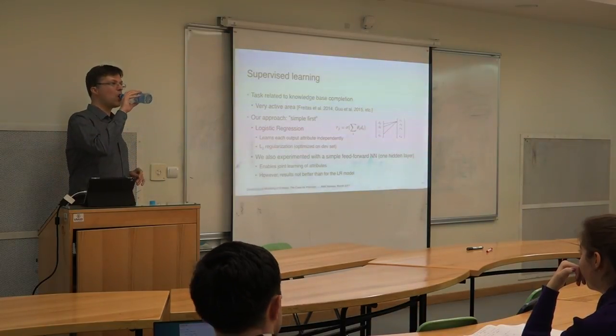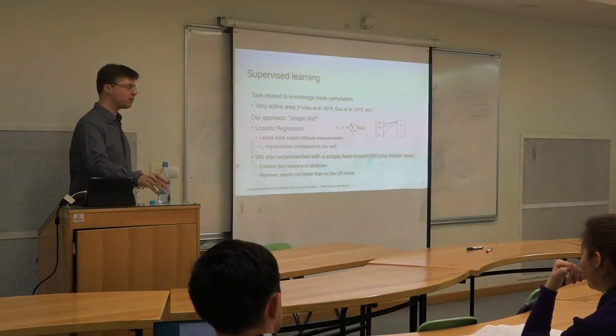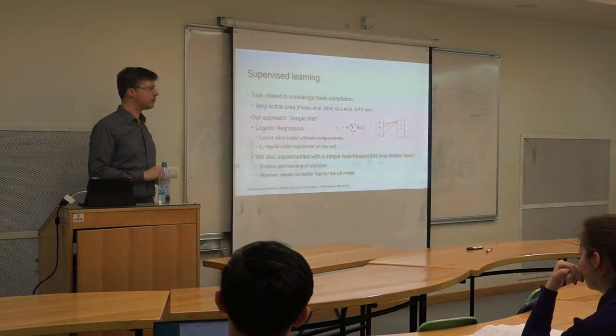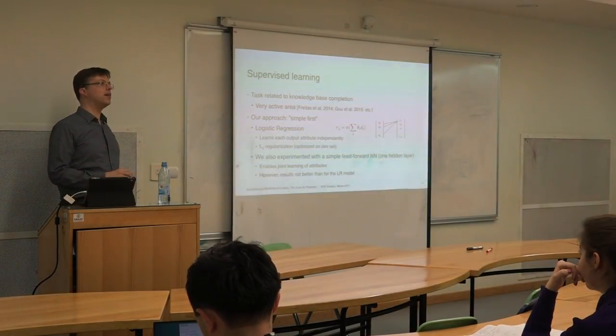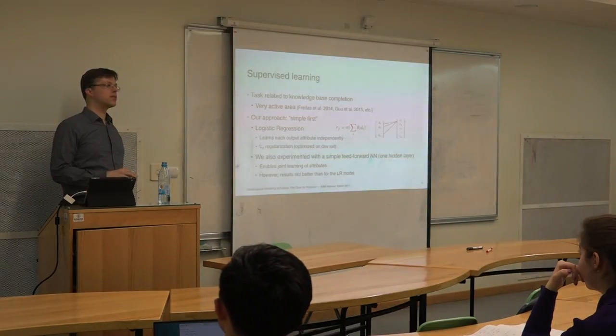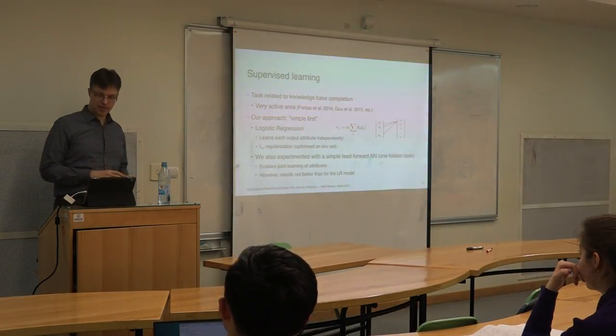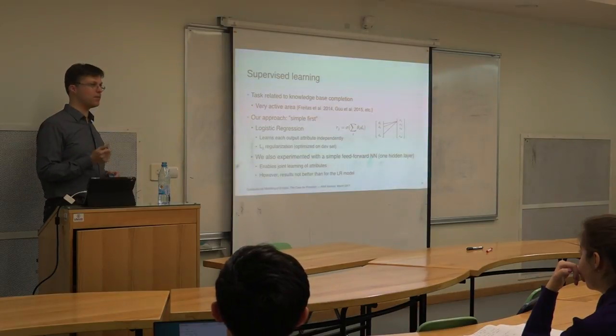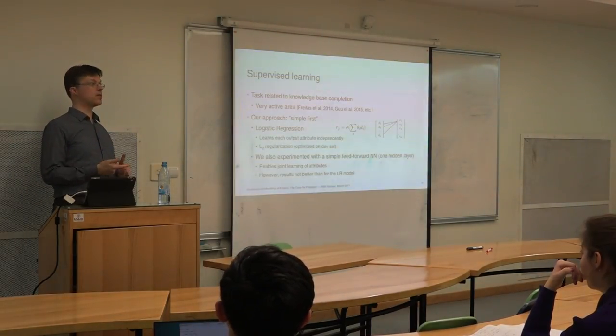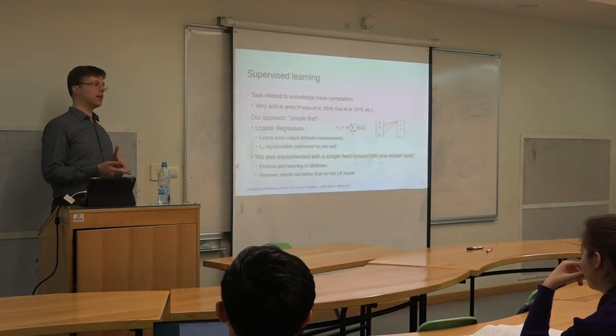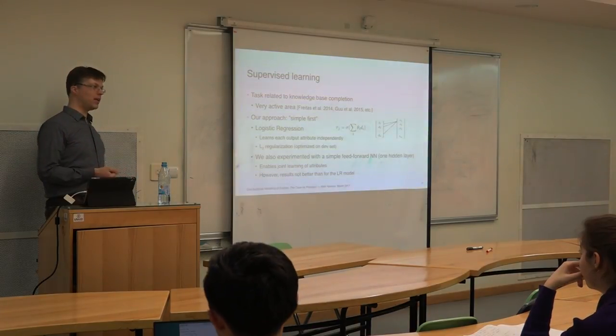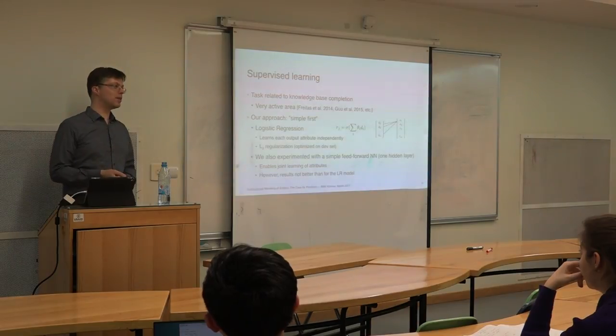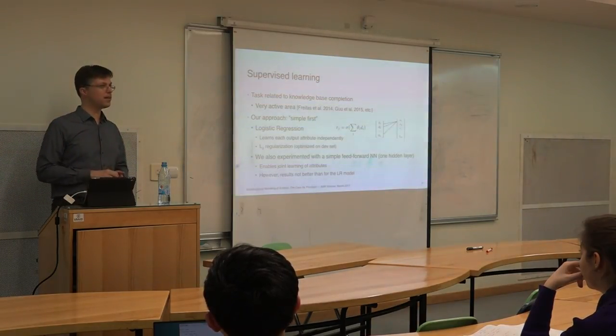Yeah, so basically we have two questions. First, not sure why you want to use logistic regression rather than linear regression if you're predicting numbers. Well, essentially because—I was going to come to this on the next slide or the slide afterwards—we have two kinds of attributes: numeric attributes and categorical attributes like form of government, which we binarize. Then we have binary attributes, and we just wanted one model that we could just plug everything in.